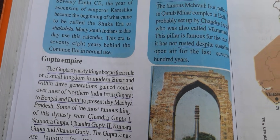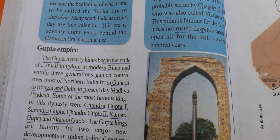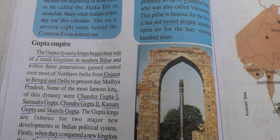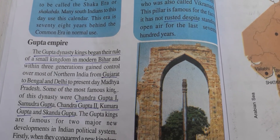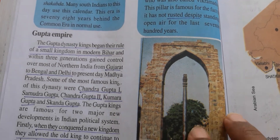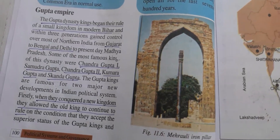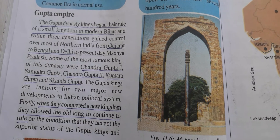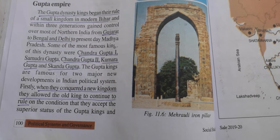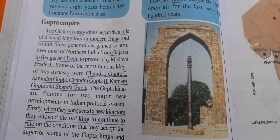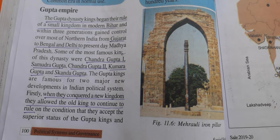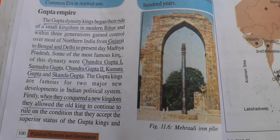Next is the Gupta empire. The Gupta dynasty kings began their rule of a small kingdom in modern Bihar and within three generations gained control over most of northern India from Gujarat to Bengal and Delhi to present-day Madhya Pradesh. Some of the most famous kings of this dynasty were Chandragupta I, Samudragupta, Chandragupta II, Kumaragupta, and Skandagupta. The Gupta kings introduced major developments in the Indian political system — two different systems in particular.